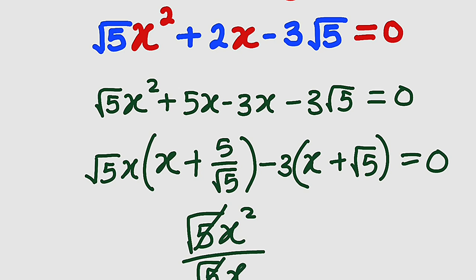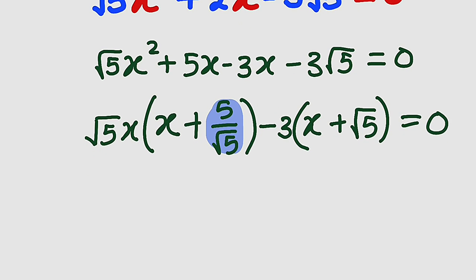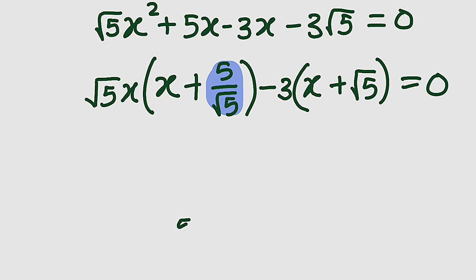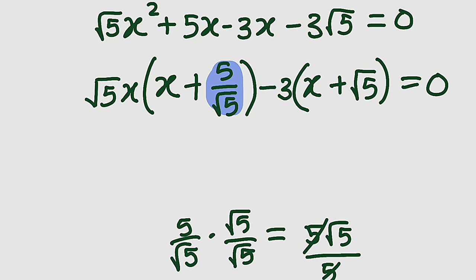This is equal to 0. Now we are going to rationalize the 5 divided by root 5. You are going to multiply the top and the bottom by root 5. To the top, we have 5 multiplied by root 5. To the bottom, we have root 5 times root 5, which is root 25. And root 25 is 5. So 5 will cancel 5, meaning the whole of this is nothing but root 5.